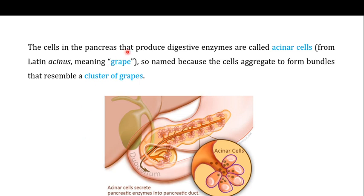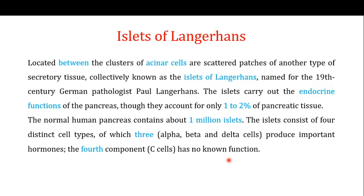The cells in the pancreas that produce digestive enzymes are called acinar cells. The term 'acinar' means grape in Latin, because the cell aggregates form bundles resembling a cluster of grapes. The acinar cells are the exocrine part of the pancreas and release pancreatic enzymes — proteases, lipases, and amylases — into the duodenum to help in the process of digestion.